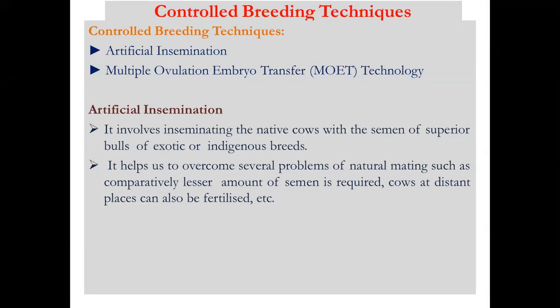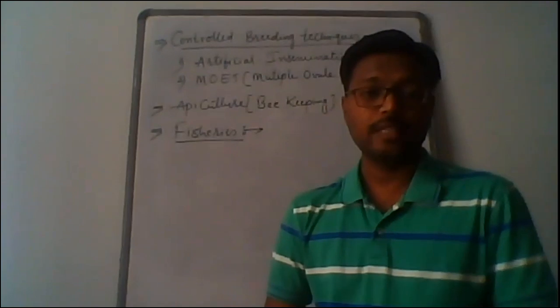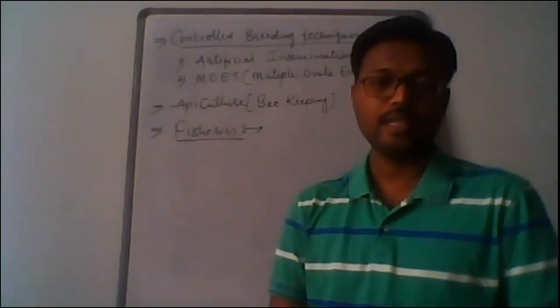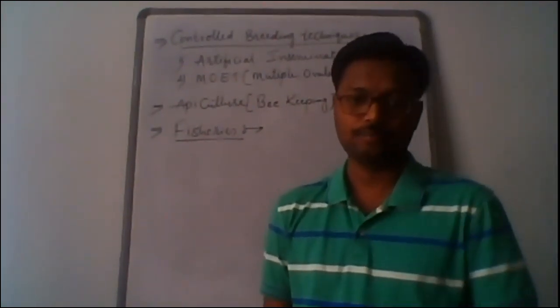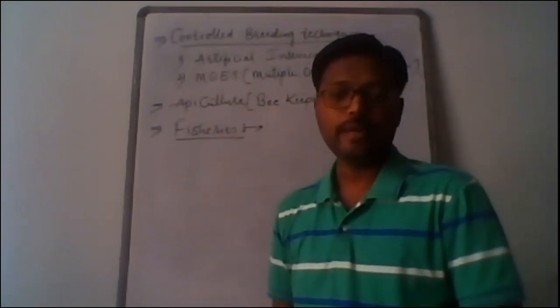What is the use of artificial insemination? It helps to overcome several problems of natural mating. Comparatively lesser amounts of semen are required, and cows at distant places can also be fertilized. Sometimes sperm count is also a problem — if the semen does not have an appropriate number of sperms, the chance of fertilization is reduced. In that case, artificial insemination is followed.